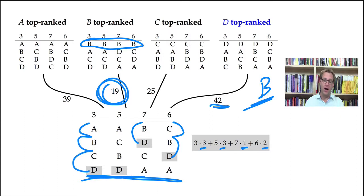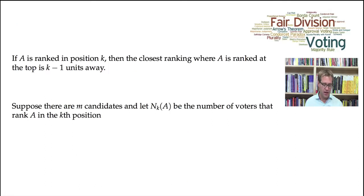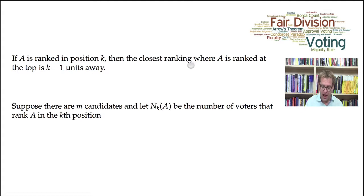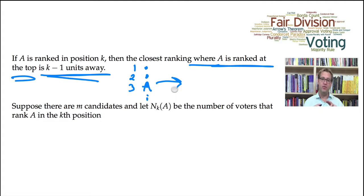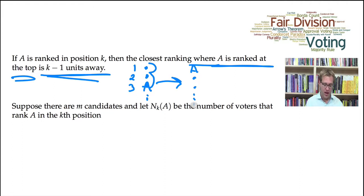We can actually prove that the candidate that minimizes that algorithm is always the Borda count winner. Why is that? If A is ranked in position K, then the closest ranking where A is ranked at the top is K minus one units away. For example, if A is ranked in the third position, to move to another ranking where you swap as few positions as possible but move A to the top, you have to move A up two positions. So if A is ranked in the K-th position, the closest ranking where A is at the top is K minus one units away.